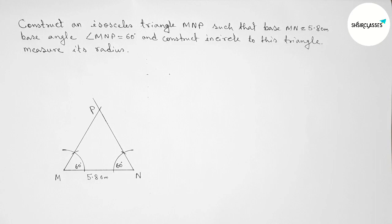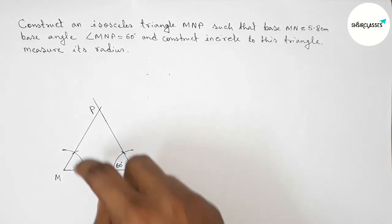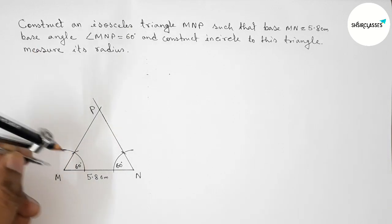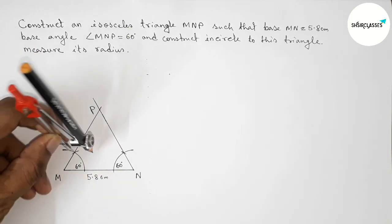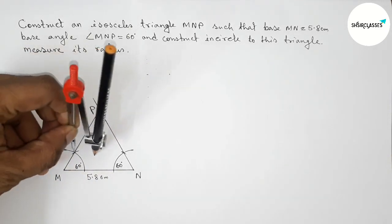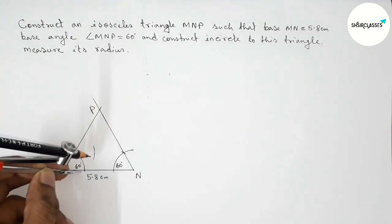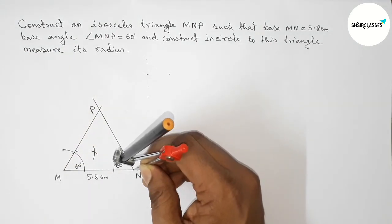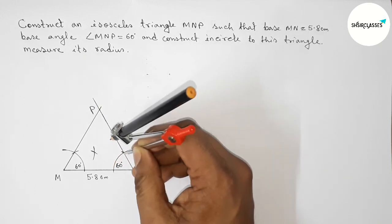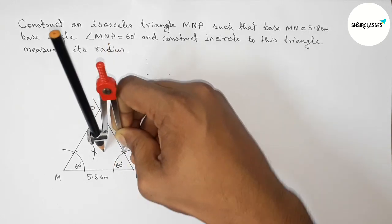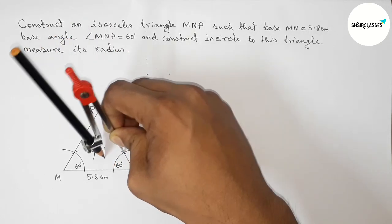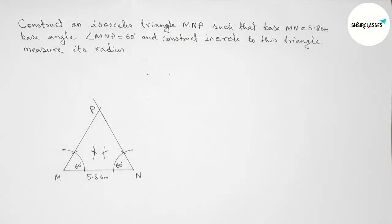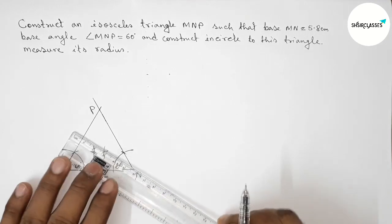Next we have to construct the incircle to this triangle. First we need to bisect the angles. Taking the same length, putting the compass and drawing an arc, then putting the compass again with the same length and cutting here to bisect the angles.